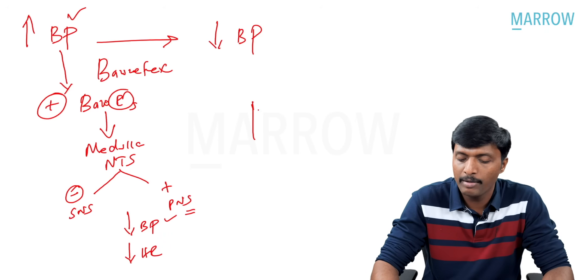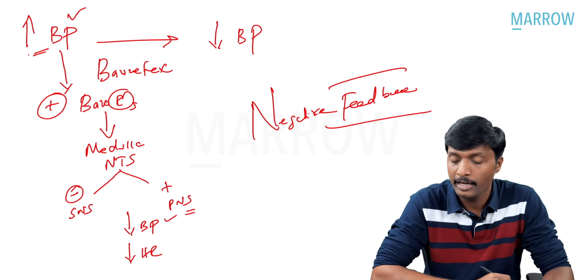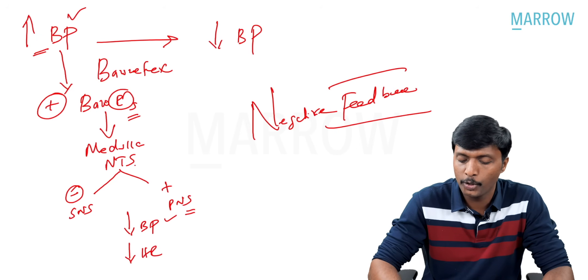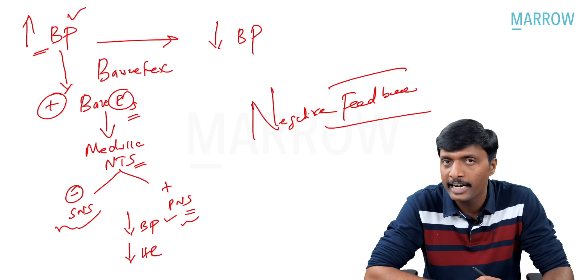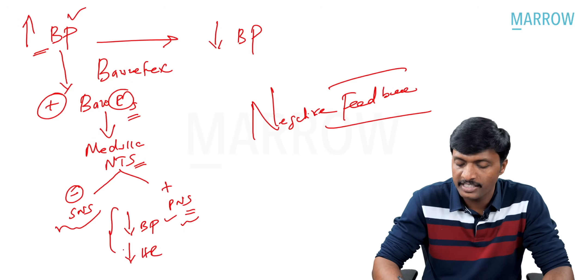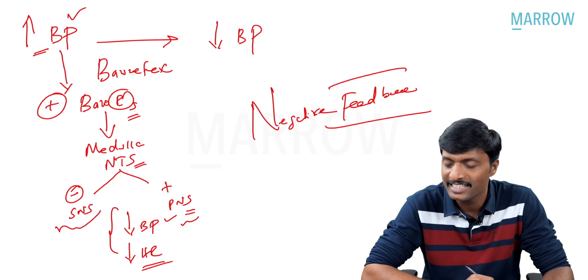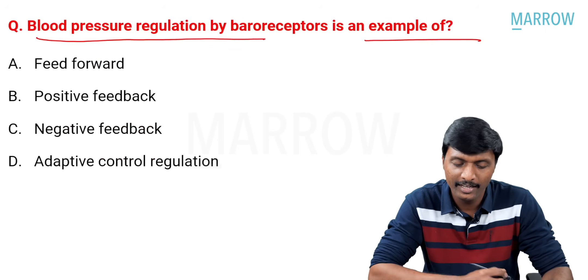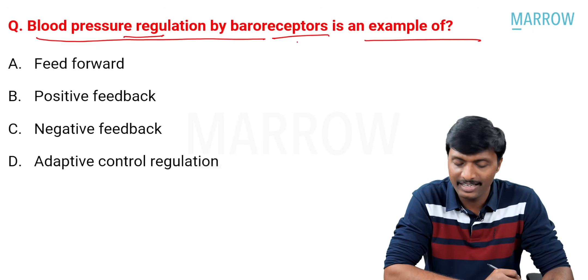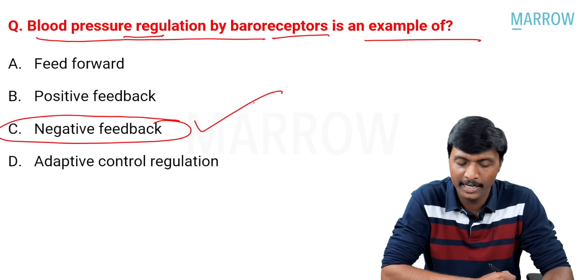What type of feedback mechanism is this? It is a classical example for negative feedback system. Increase in BP, baroreceptor activation. The information goes to medulla, nucleus tractus solitarius, sympathetic inhibition, parasympathetic activation. The overall result is fall in BP, fall in heart rate. So, increase is followed by a decrease. It is a classical example for a negative feedback. Now, let's go into the question. Blood pressure regulation by baroreceptor is a classical example for negative feedback. The answer is C here. Negative feedback.